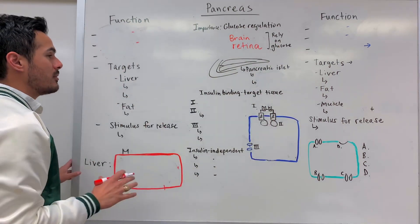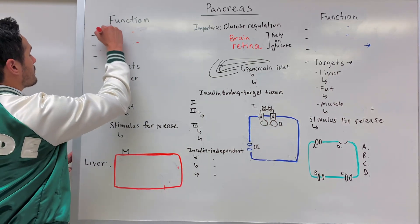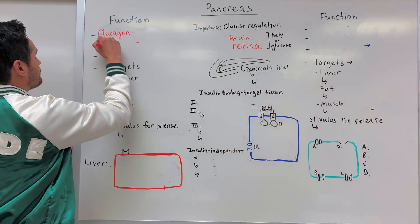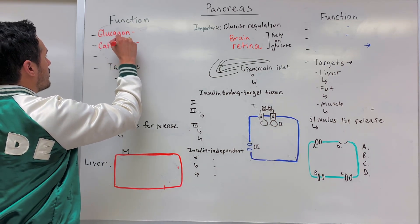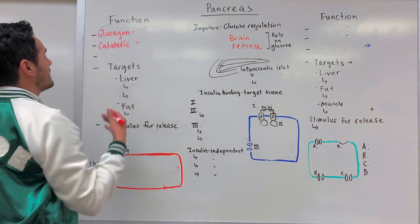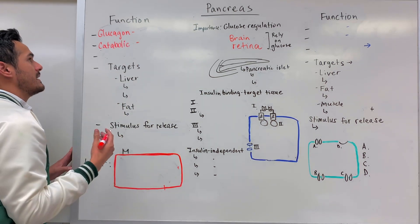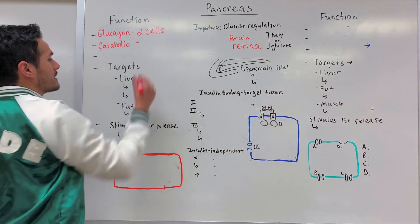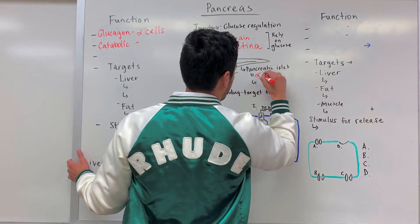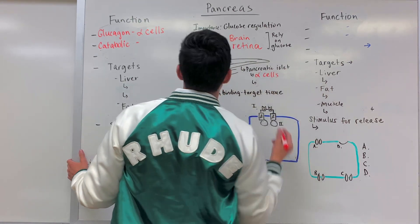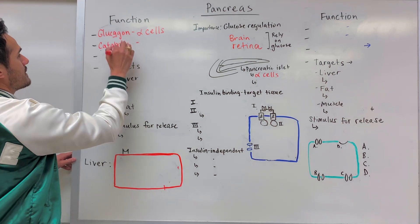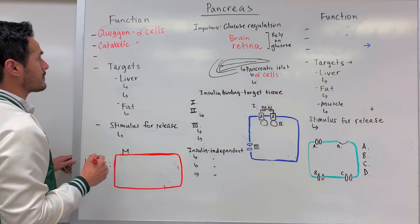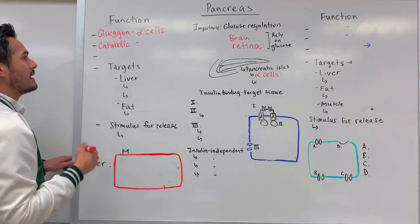The first hormone we're going to talk about is glucagon. Glucagon is what's known as a catabolic hormone, meaning that it breaks things down. Glucagon is secreted by the alpha cells, which are found within the pancreatic islets. An easy way to remember this: glucagon has an A — for alpha cells.